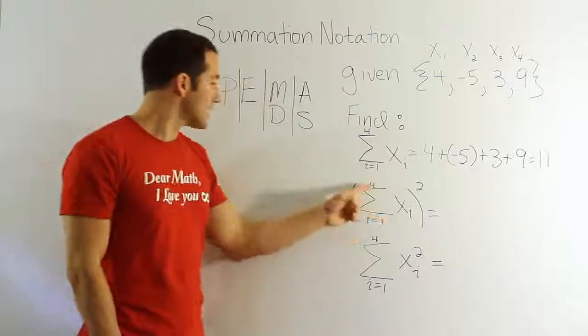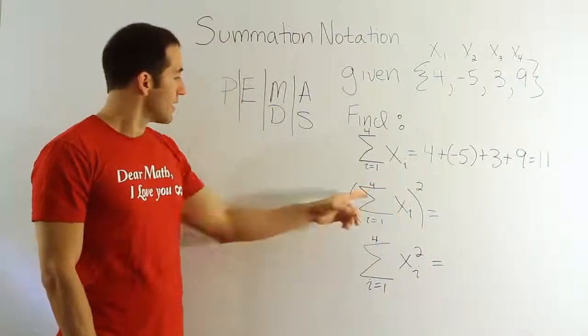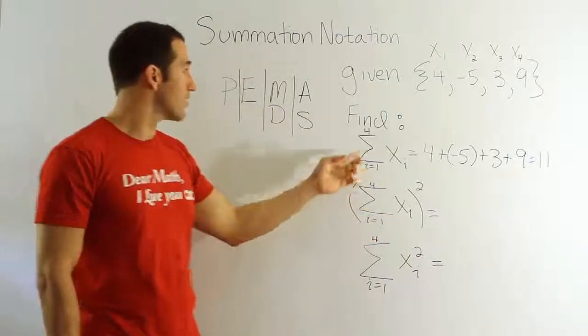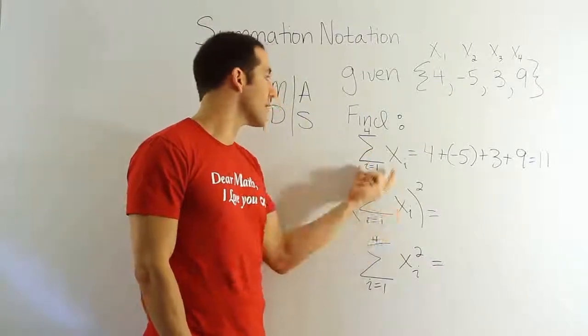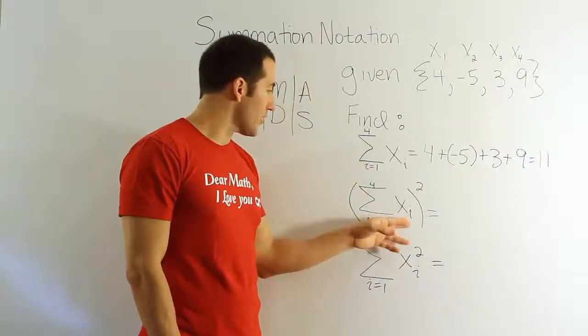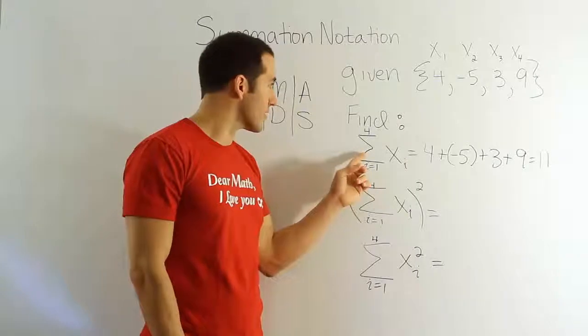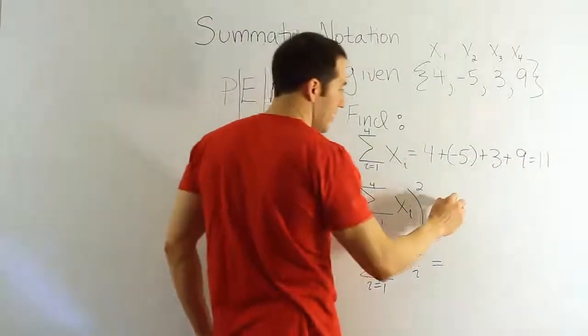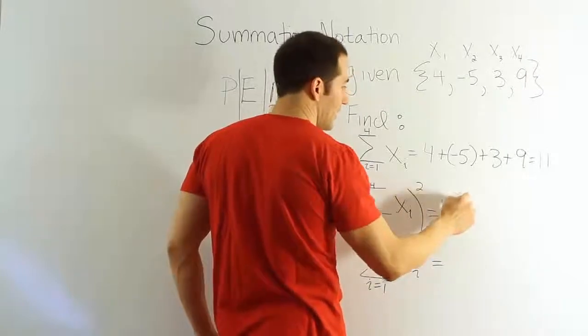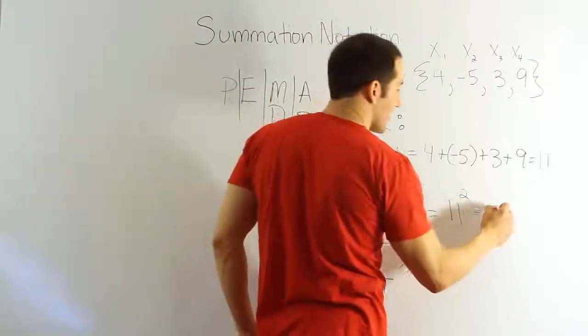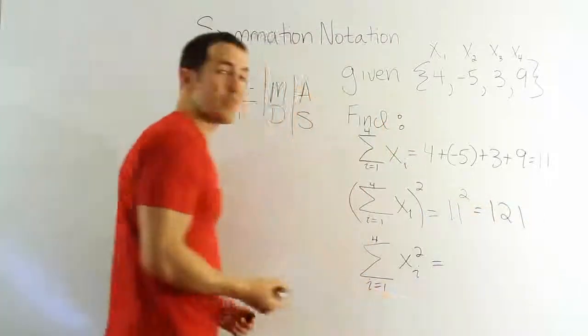Let's do what's inside the parenthesis first. Inside the parenthesis is an addition problem. That addition problem has already been solved for us - this part inside the parenthesis is the same as this part here. Adding up all the x values from the first to the fourth value gives us 11. So, we'll have 11 quantity squared. And 11 squared is 121.